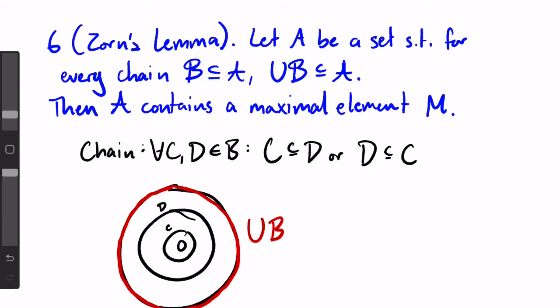So the union of b is in a. What Zorn's Lemma tells us is that if for every chain in a, the maximal element of that chain is also in a, then a itself must contain a maximal element.